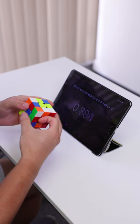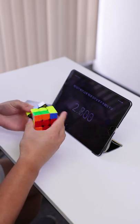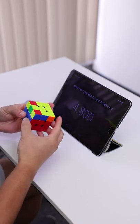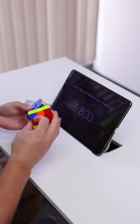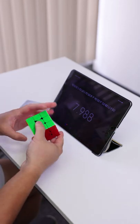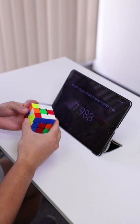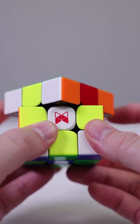This new custom core gives the Tornado V2 a more comprehensive magnetic feel, much like the GAN 11M Pro, the first 3x3 to feature a magnetic core. In addition to a more well-rounded magnetic feel, this lets you leave the cube on looser settings, giving you more space for movement and corner cutting.